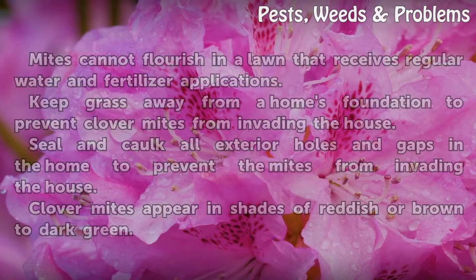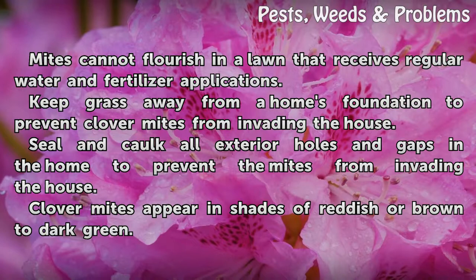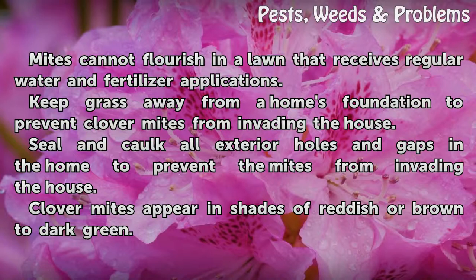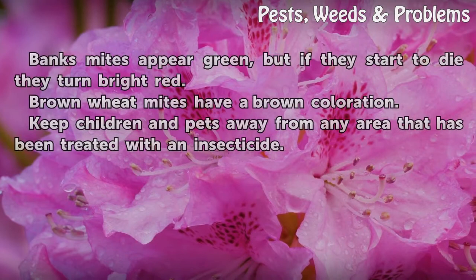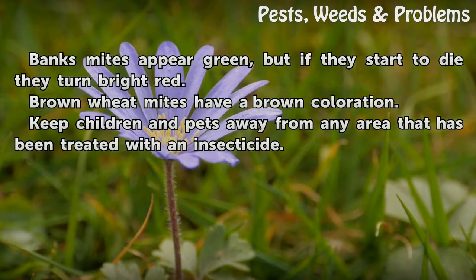Tips and Warnings. Mites cannot flourish in a lawn that receives regular water and fertilizer applications. Keep grass away from a home's foundation to prevent clover mites from invading the house. Seal all exterior holes and gaps in the home to prevent the mites from invading. Clover mites appear in shades of reddish or brown to dark green; Banks mites appear green, but if they start to die they turn bright red; brown wheat mites have a brown coloration. Keep children and pets away from any area that has been treated with an insecticide.